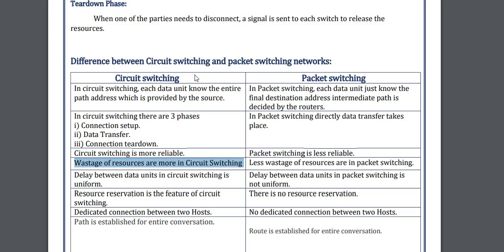If you are talking to your friend, the line is busy — no one else can communicate with you and your friend in circuit switching. But in packet switching it is like a Facebook Messenger system, meaning if you are chatting with one friend, another one can easily send you a message. This is known as packet switching.